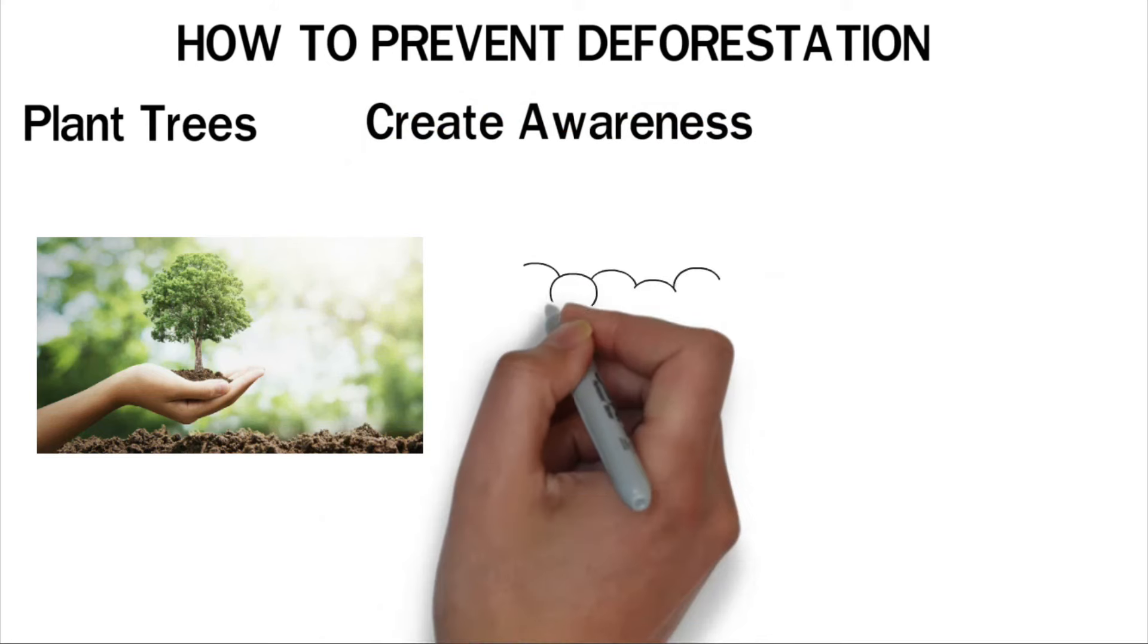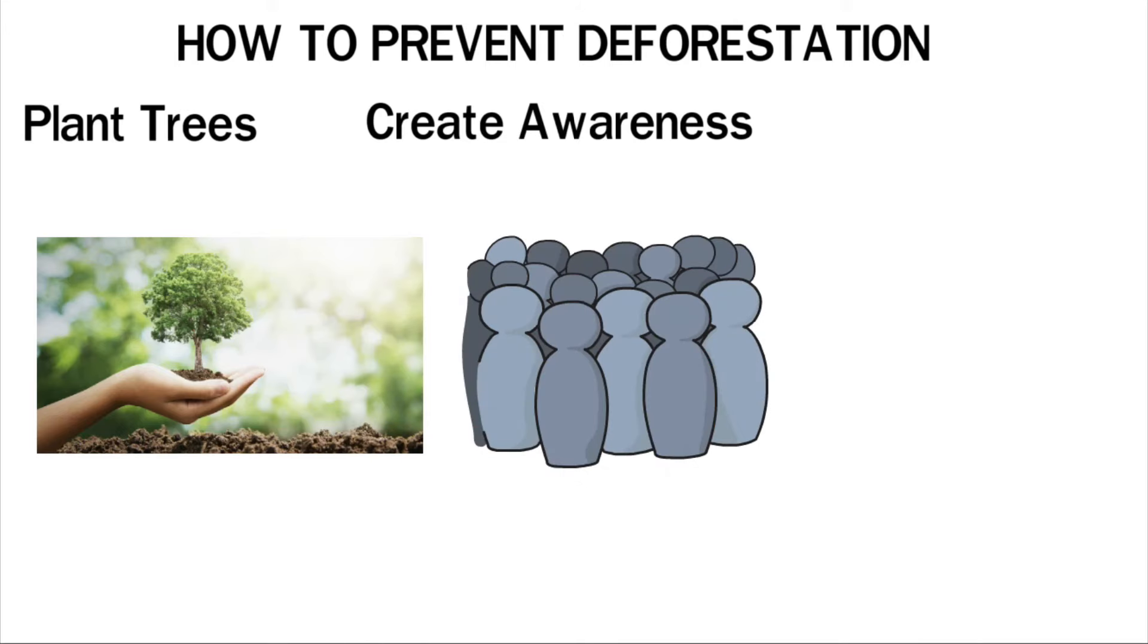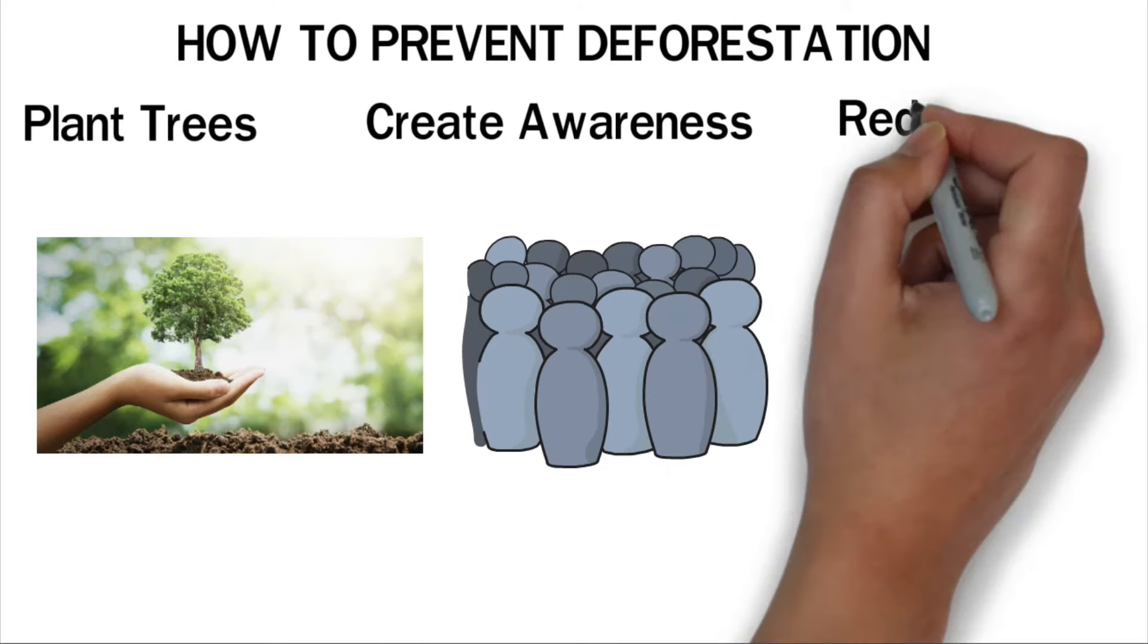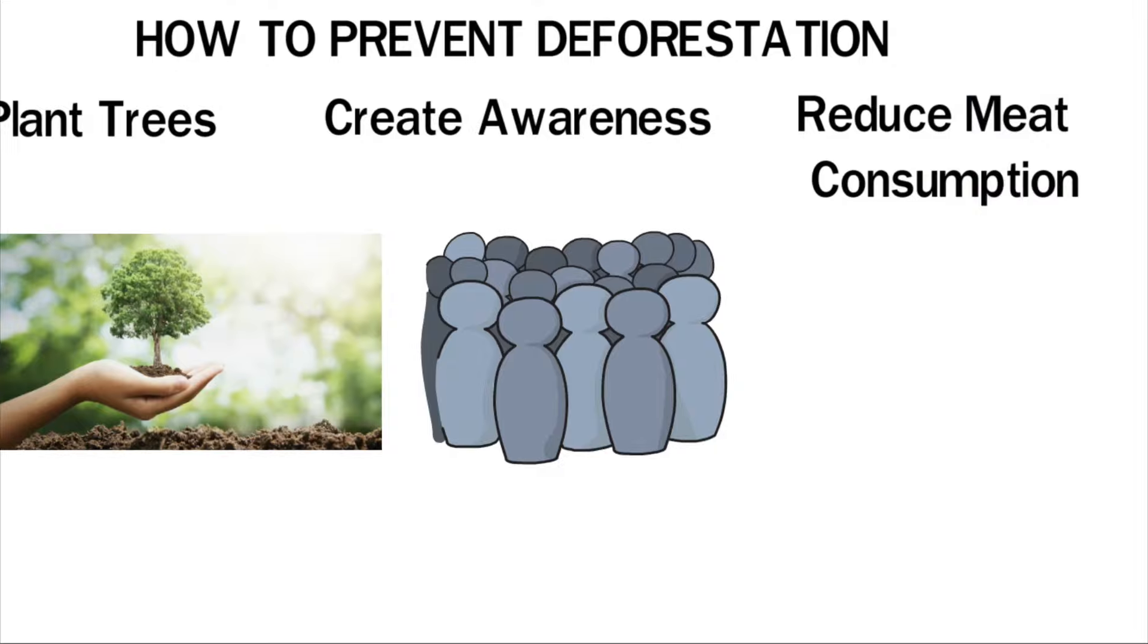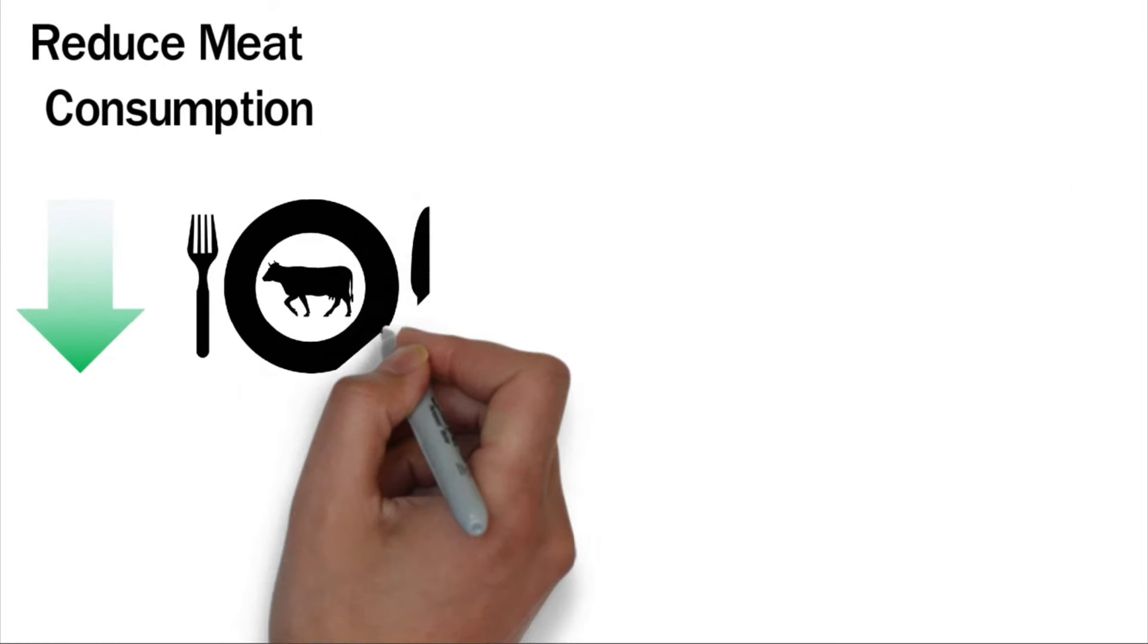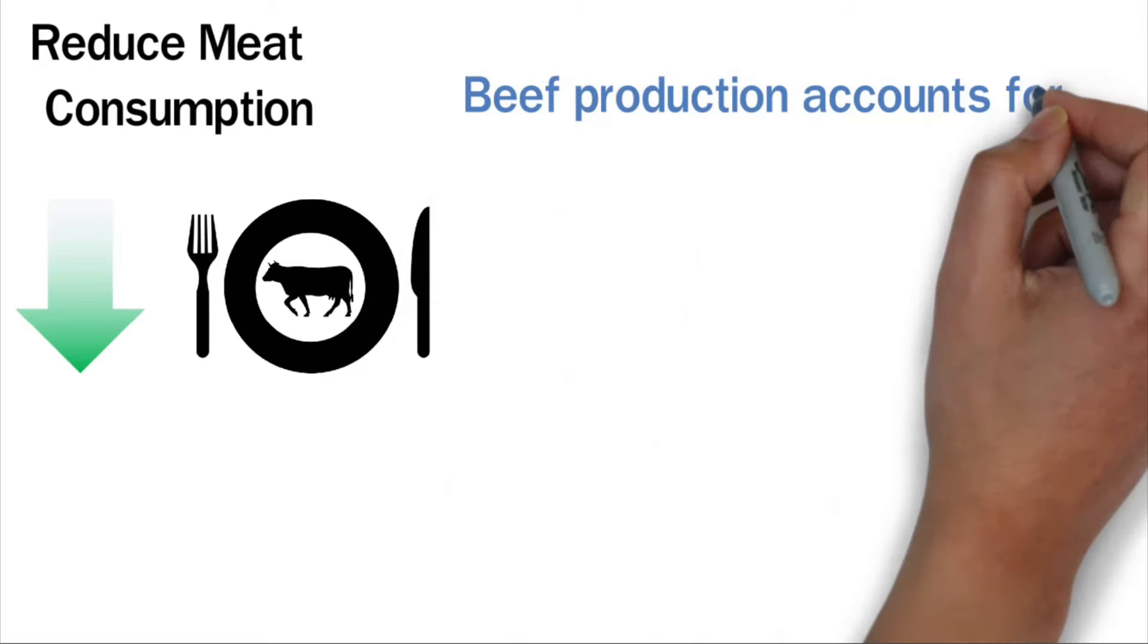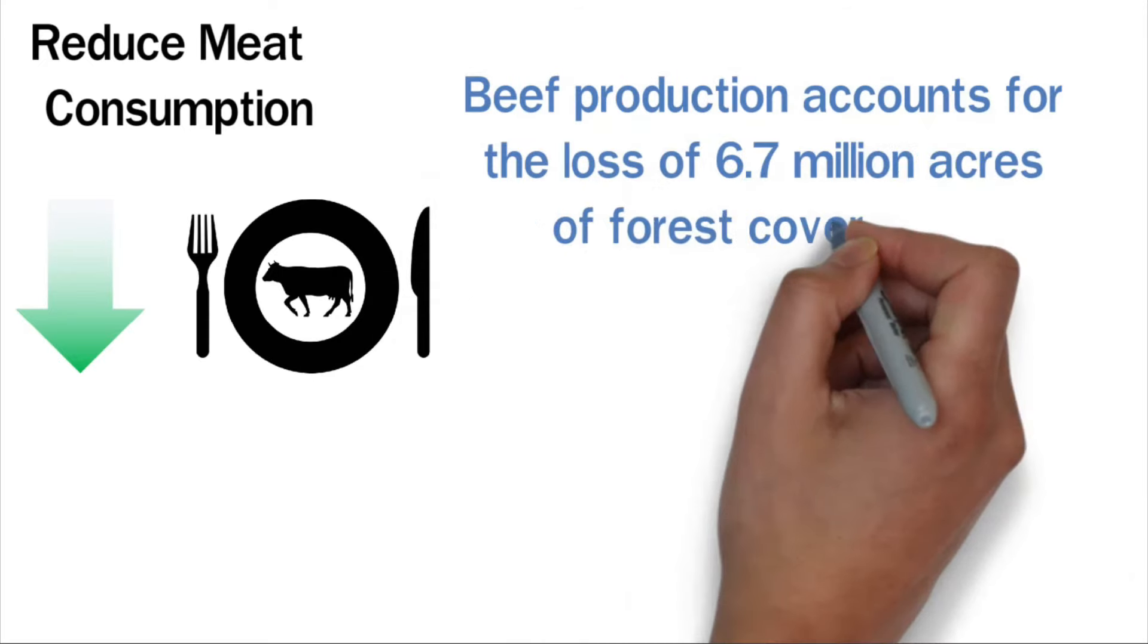Most people don't know the effect that deforestation has on the environment. With proper education, people will learn how they can preserve forests. Reduce meat consumption: Meat production requires a lot of space. This means forests have to be cut down to get the required space. Beef production accounts for the loss of 6.7 million acres of forest cover in the tropical regions each year.